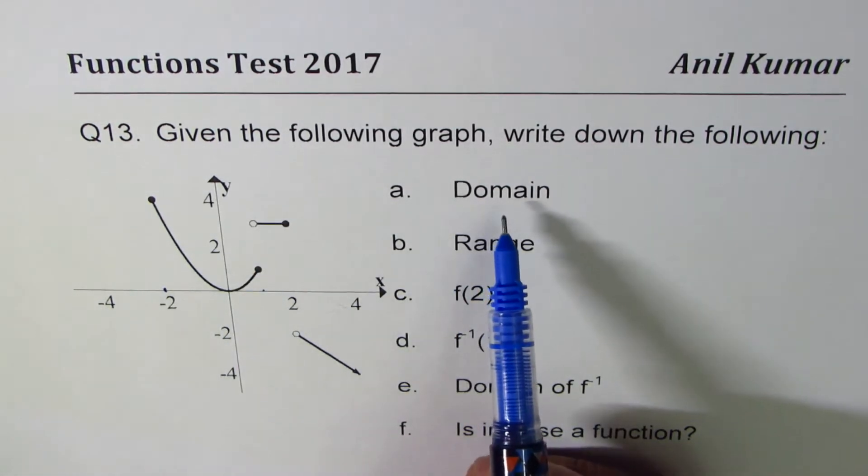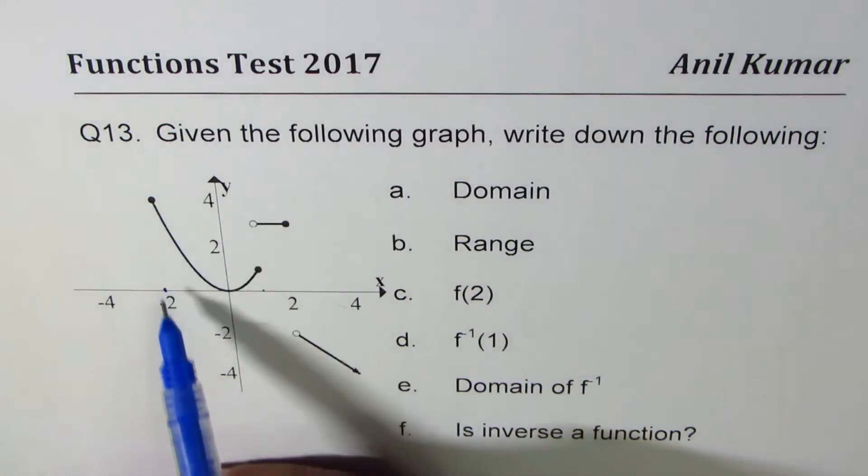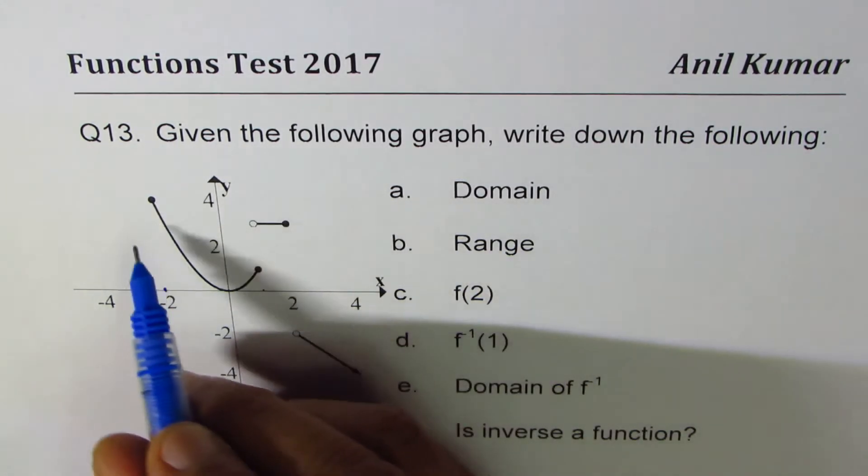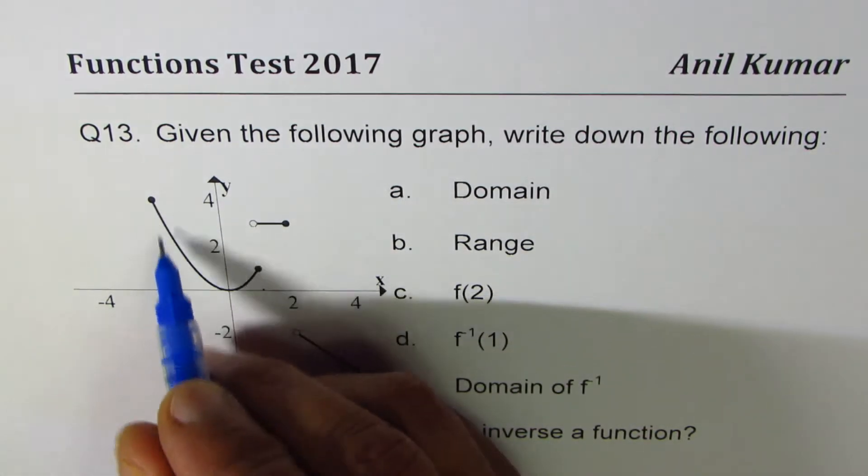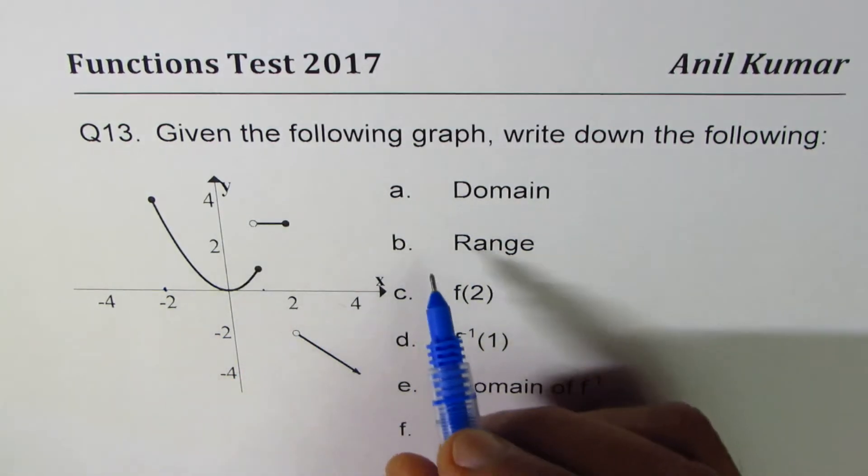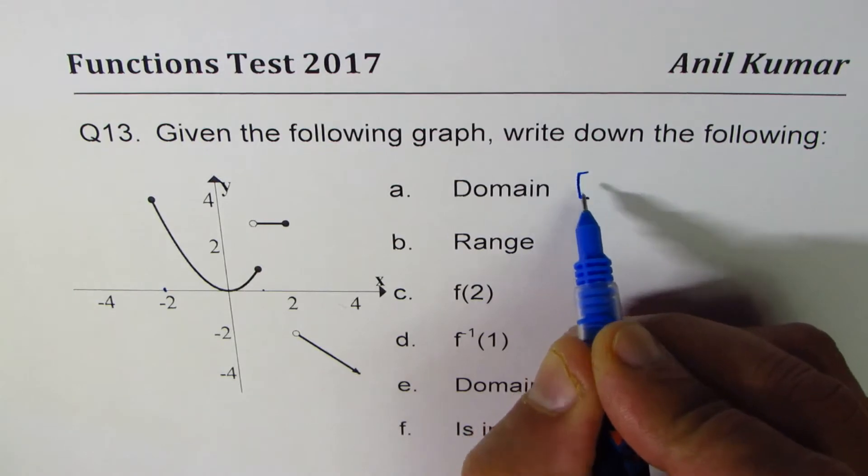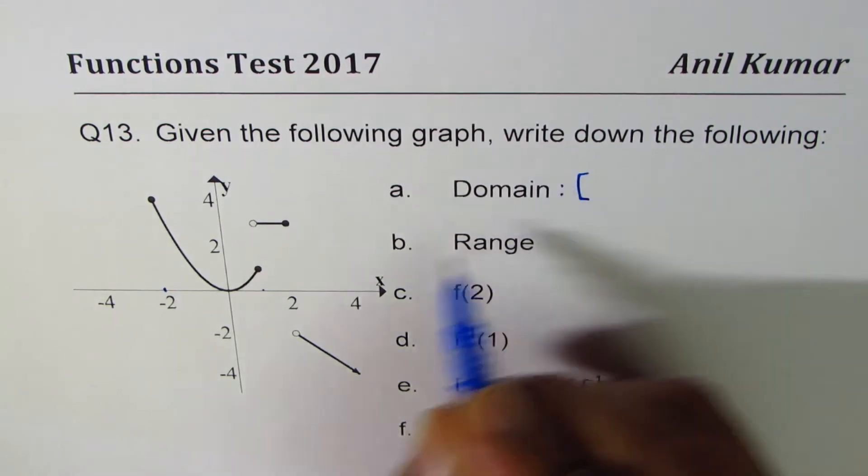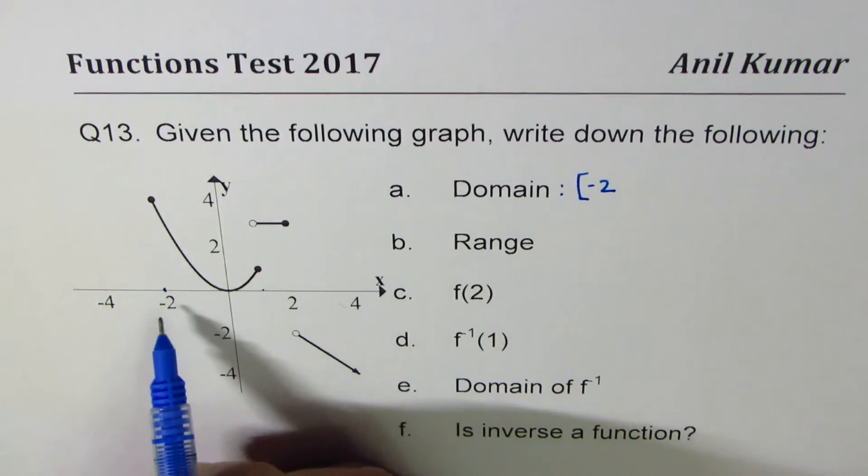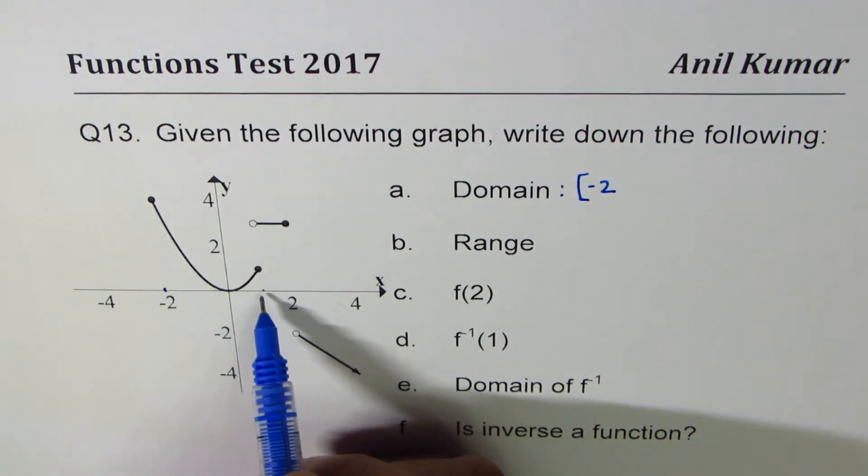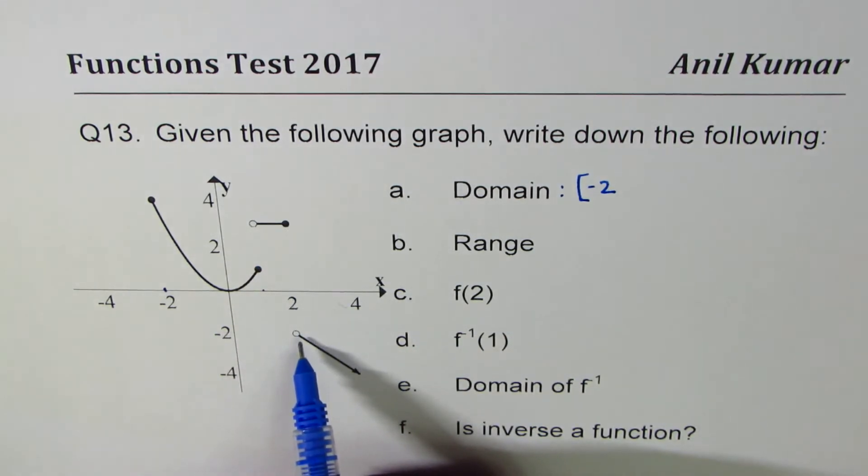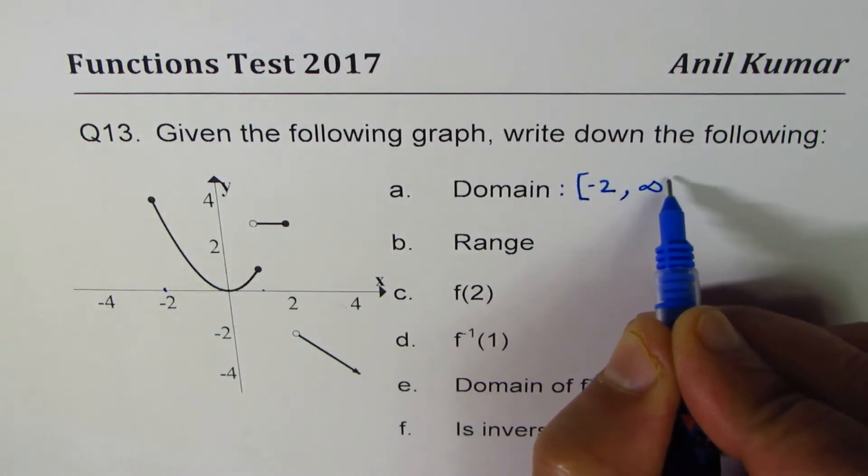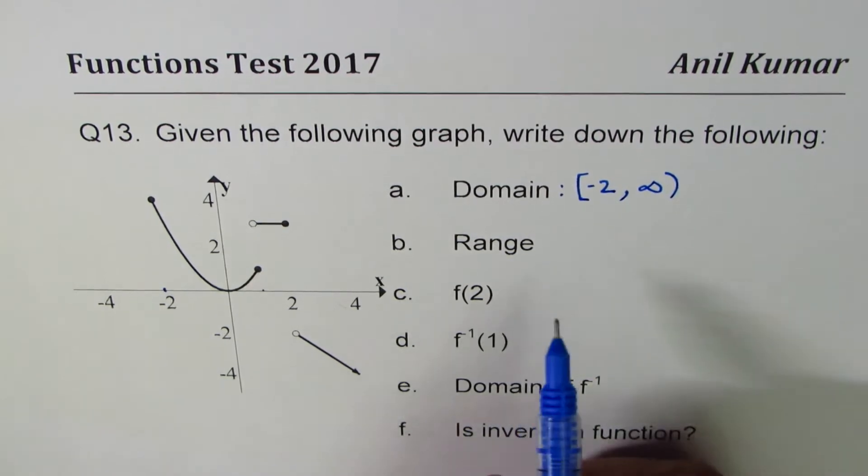Let's write down the domain of the function. The leftmost point is at minus 2. Since it is a filled in circle, that minus 2 is included, so we will write that square bracket, which means included minus 2. As you move right, at 1 there's a jump discontinuity, however the function continues at 2. Again there's a jump discontinuity and it further continues till infinity. So the domain is from minus 2 to infinity.